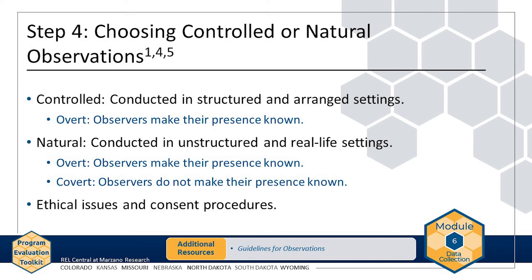In the AMP example, the evaluation team wants to observe students during AMP tutoring sessions. This would be a natural observation, because the tutoring session would occur with or without the instance of an observation. The observers let tutors and students know they will be observing the session. Participants may change their behavior in an observer's presence. Ecological validity refers to the extent to which results are generalizable to real-life settings. If ecological validity is important, consider conducting covert observations. Whether you conduct overt or covert observations, always consider ethical issues and consent procedures, such as the privacy of those being observed. The Guidelines for Observations includes references that explore ethical considerations in greater depth.